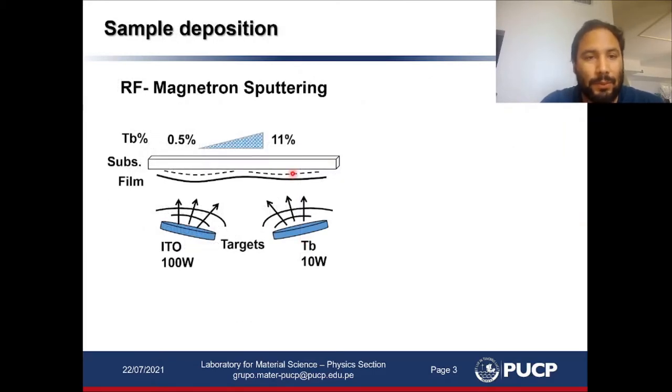We have grown our samples by radiofrequency magnetron sputtering to obtain samples with different terbium concentrations in a single deposition process. Additionally, we realized by experimentation that in order to activate the terbium-related luminescence by post-deposition thermal treatments, it was necessary to cool down the substrates during the deposition process.